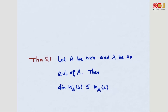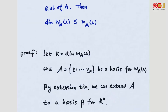In the previous example, we saw that the dimension of the eigenspace associated with lambda can be smaller than the multiplicity of lambda. Theorem 5.1 tells us that the dimension of the eigenspace associated with lambda is always less than or equal to the multiplicity of lambda. To show this, let k equal the dimension of the eigenspace.